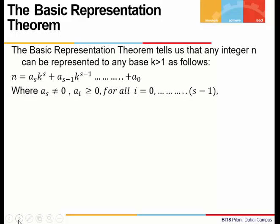The Basic Representation Theorem says that any integer n can be represented to any base k, where k is greater than 1, as follows: n equals a_s times k to the power s plus a_{s-1} times k to the power s-1, and so on up to a_0. This means that n has been written as a sum of powers of the base k. A few things to remember: the coefficient of the highest power of the base should be non-zero, and all other coefficients are positive. They can be zero also.